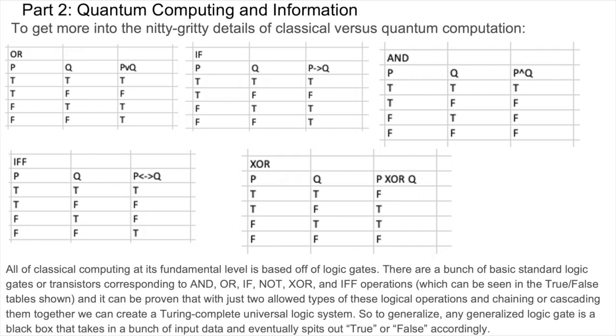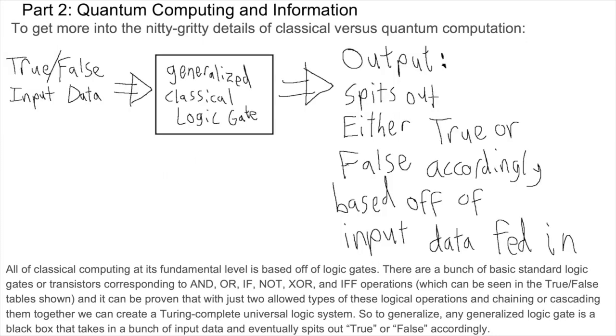To get more into the nitty-gritty details of classical versus quantum computation, all of classical computing at its fundamental level is based off of logic gates. There are a bunch of basic standard logic gates or transistors corresponding to AND, OR, IF, NOT, exclusive OR, and IF and only IF operations, which can be seen in the true-false tables shown. And it can be proven that with just two allowed types of these logical operations and chaining or cascading them together, we can create a Turing complete universal logic system. So to generalize, any generalized logic gate is a black box that takes in a bunch of input data and eventually spits out true or false accordingly.